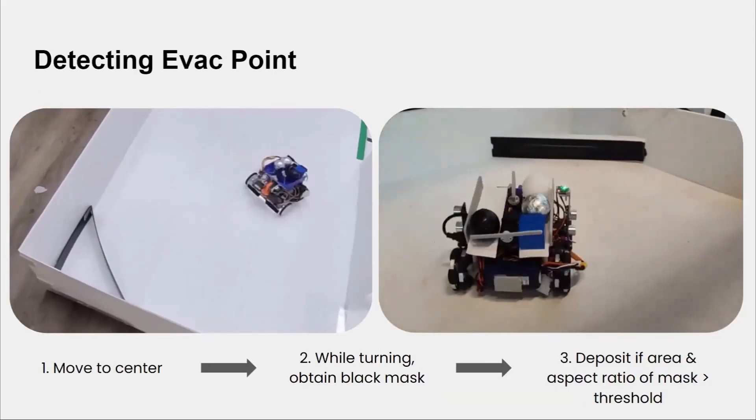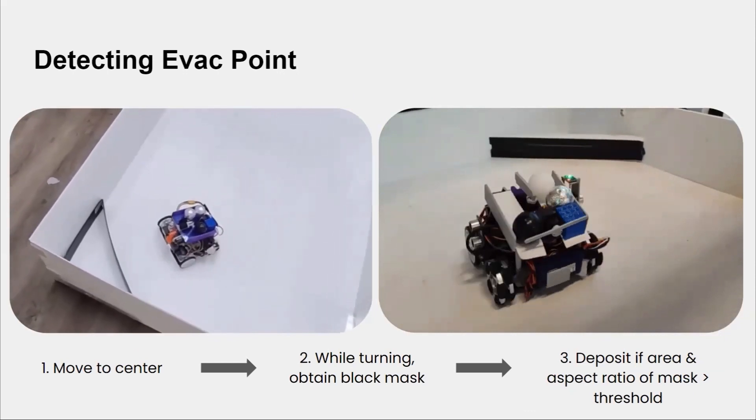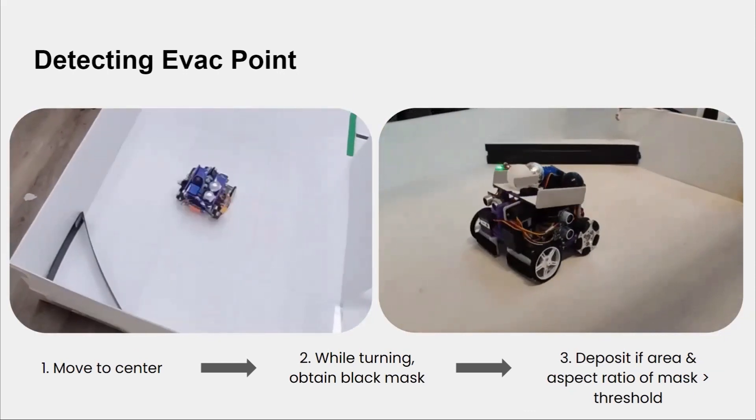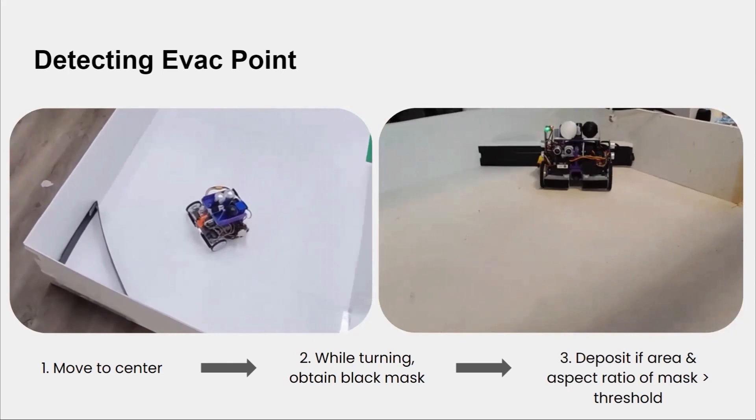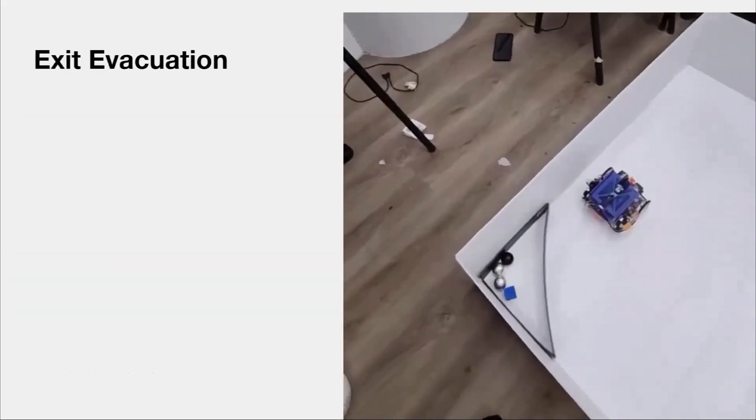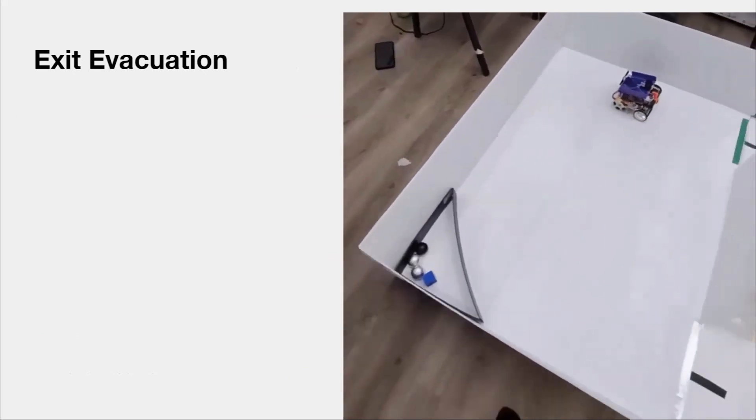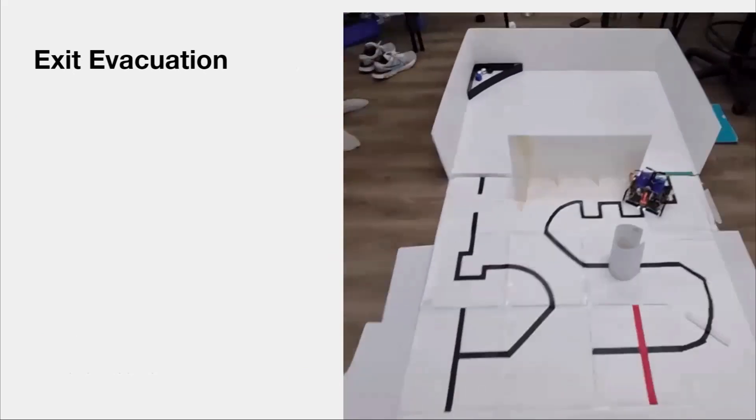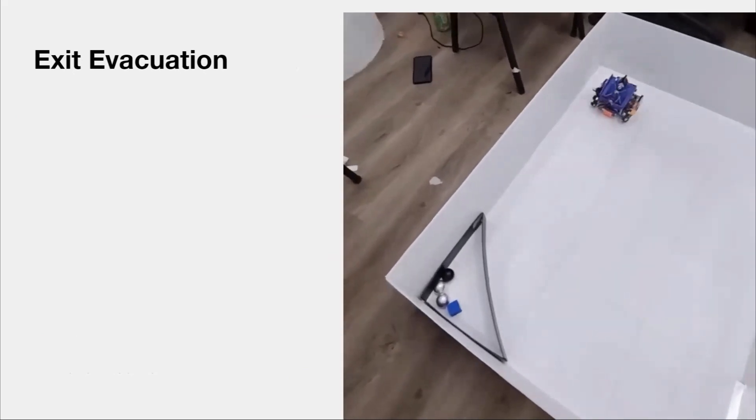We detect the evac point by moving to the center and turning on the spot. While turning, we obtain a black mask and deposit if the area and aspect ratio of the black mask is more than the threshold that we decided. Exiting the evac is done by tracking the wall out of the zone, after which the Teensy will signal to the Pi to switch back to line track mode.